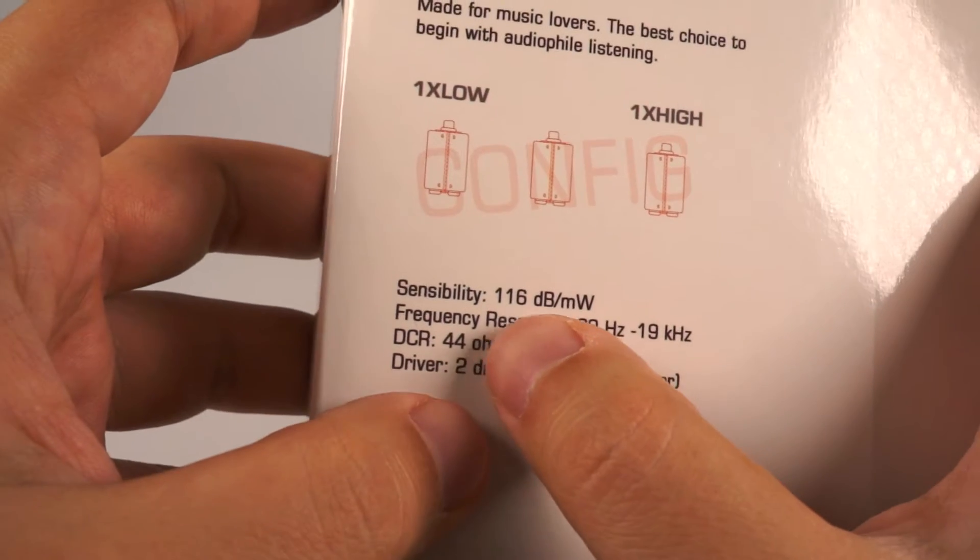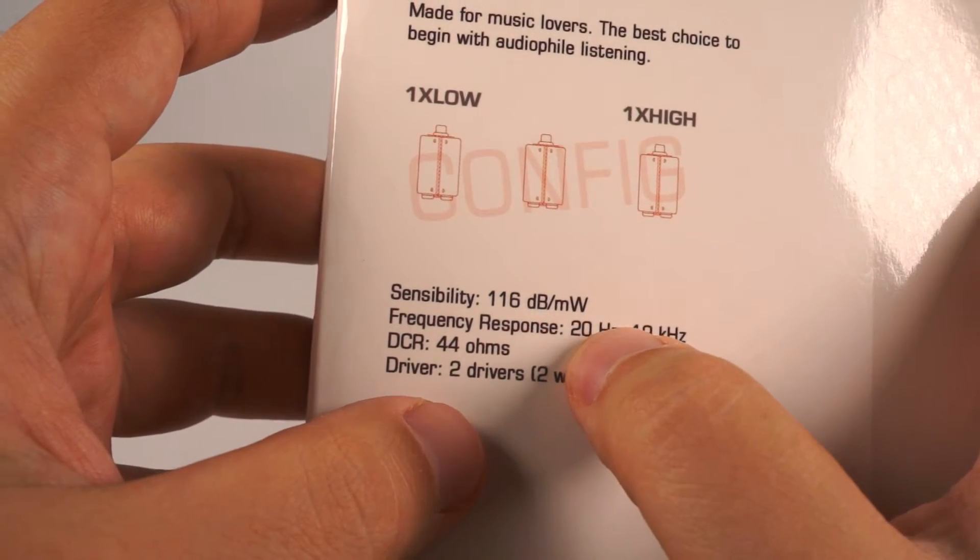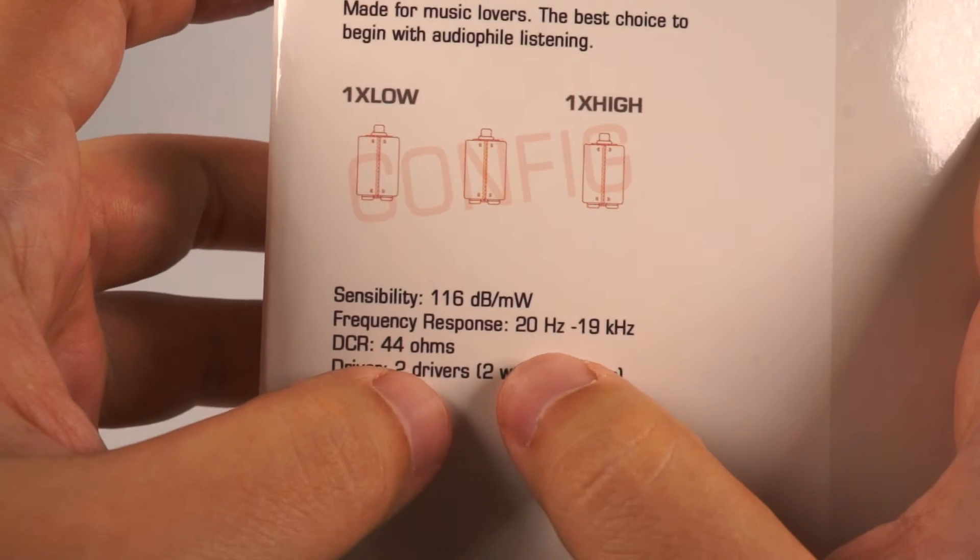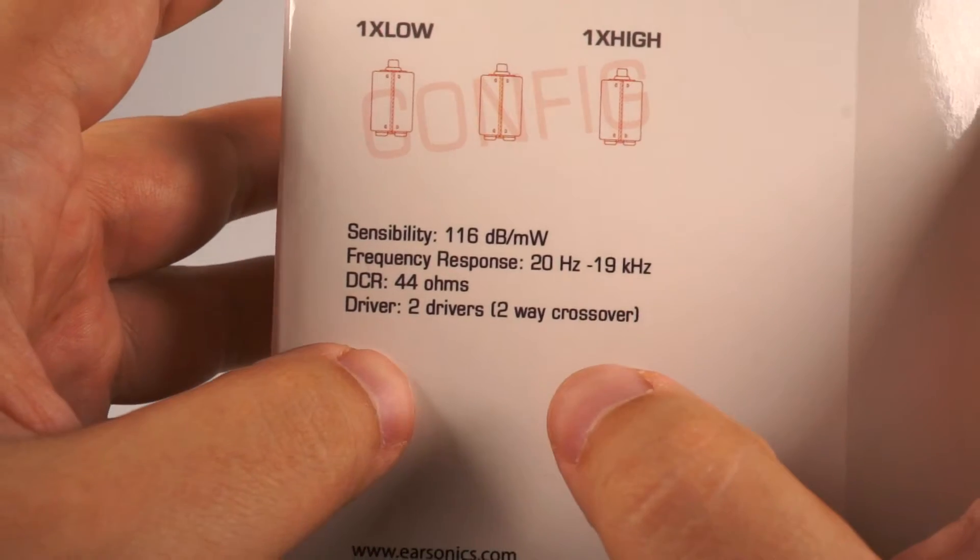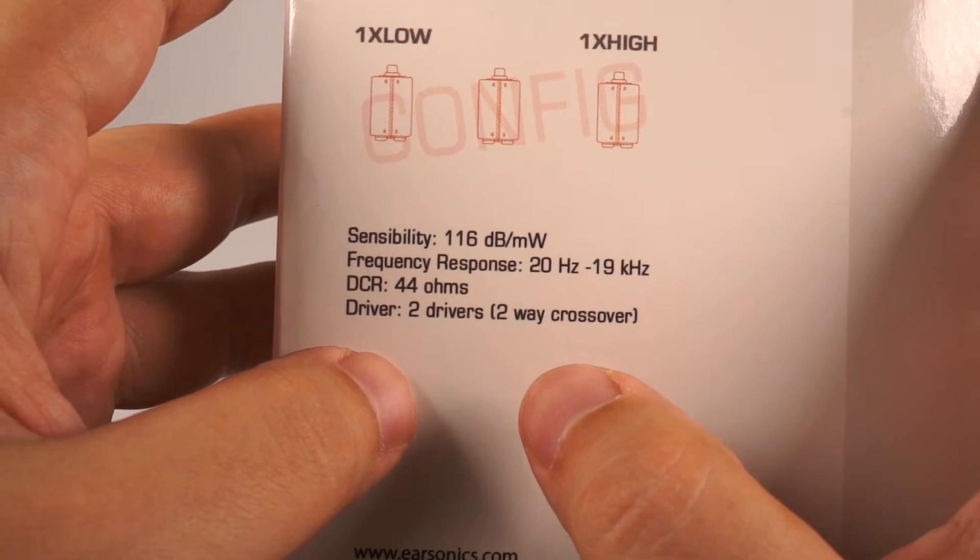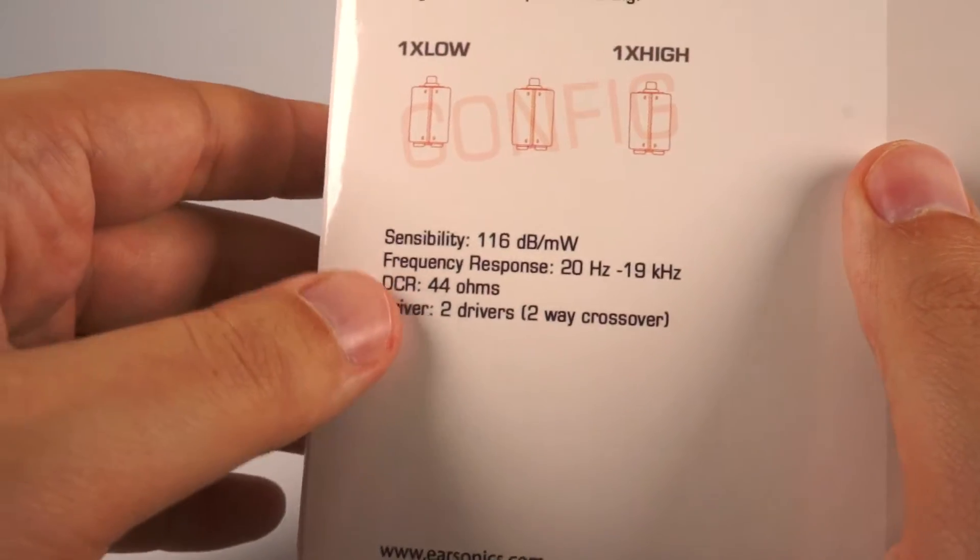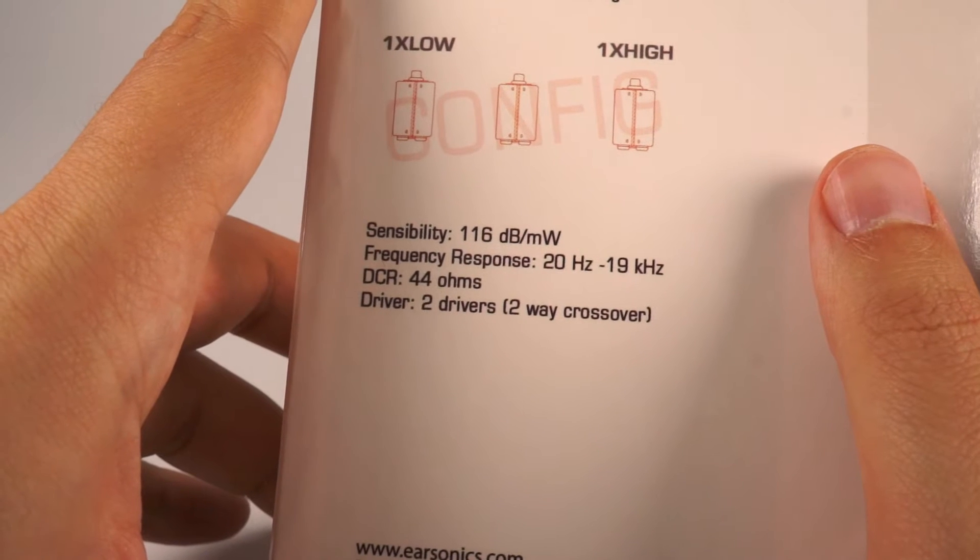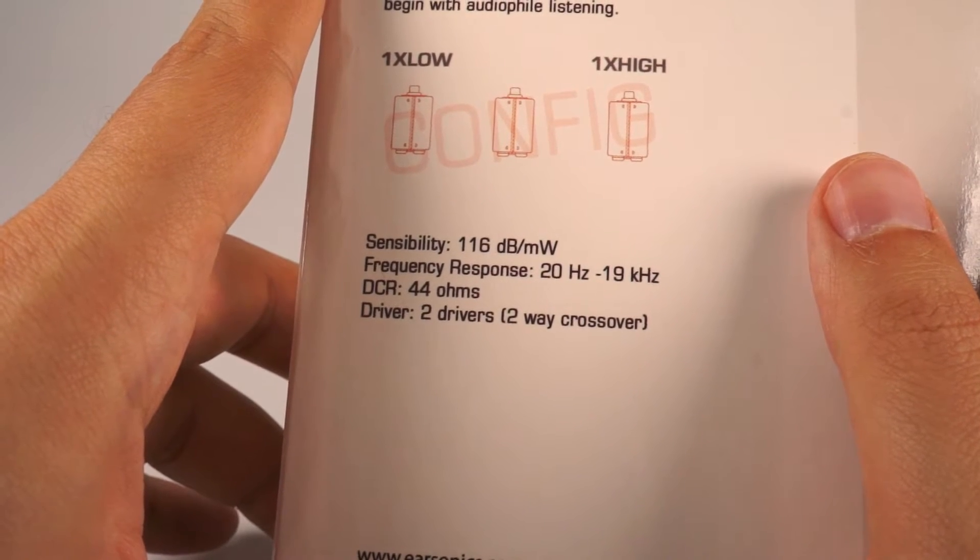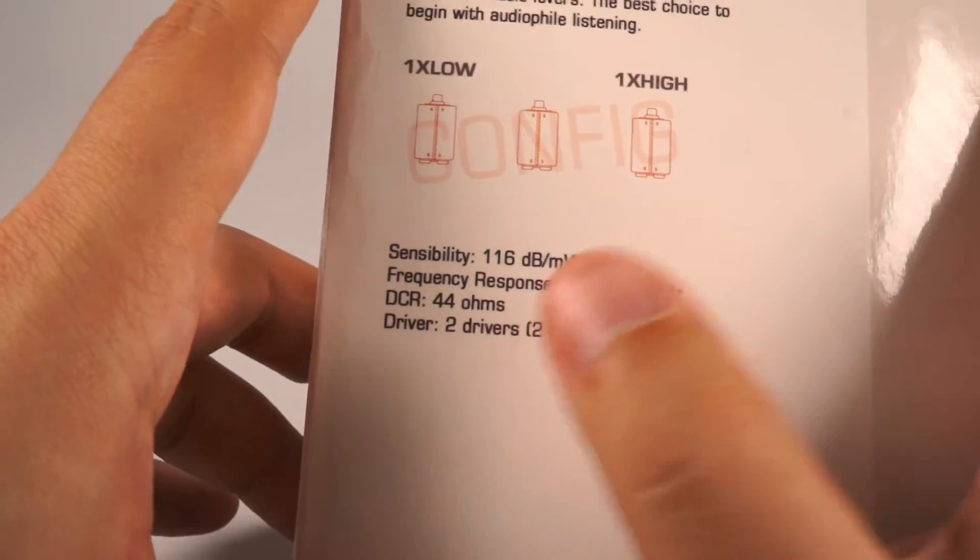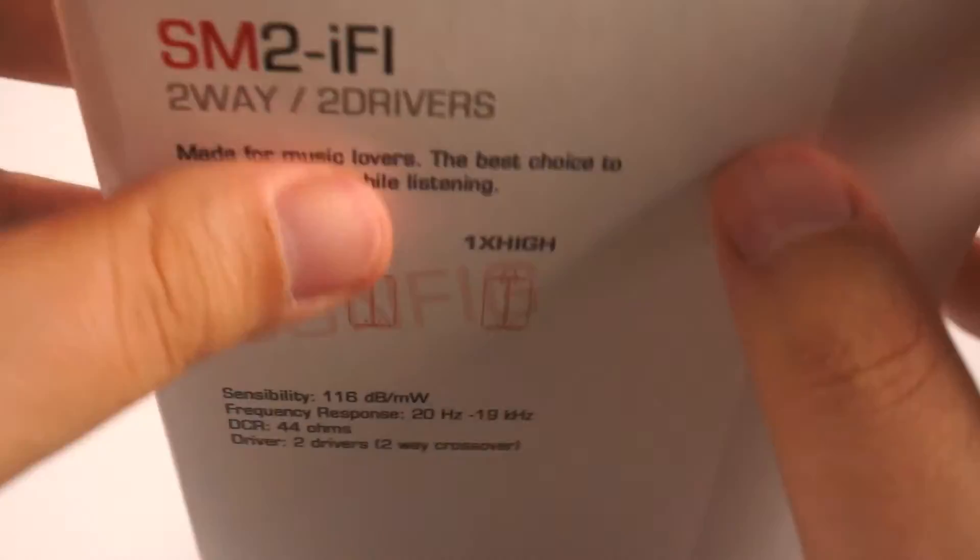Also there is 116 decibels per milliwatt, they are pretty sensitive. Frequency response normal, 44 ohms impedance. It's pretty good because when IEMs have low impedance, it causes a lot of hiss from particular sources. So they have normal impedance.